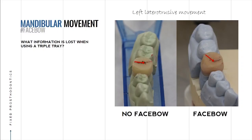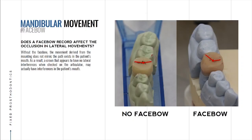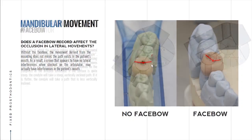To summarize the triple tray: a face bow record does NOT affect occlusal contacts in MIP — the dot contacts are the same. But a face bow DOES affect lateral movements. When you have the patient bite up and down making occlusal marks, the face bow has no bearing on that. When you move side to side, it does.